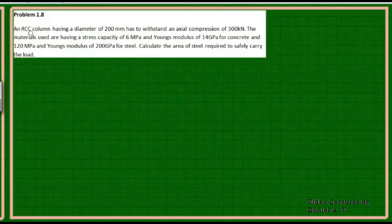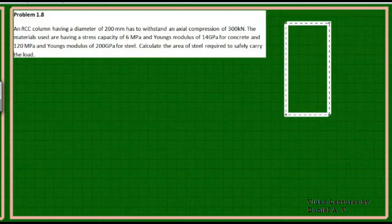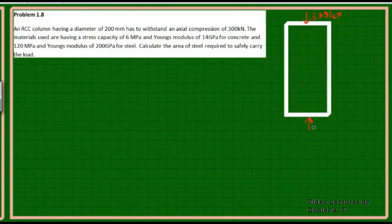We have an RCC column having a diameter of 200 mm that has to withstand an axial compression of 300 kilonewtons. The column is subjected to a compressive load of 300 kN acting from the top. Because of action and reaction — both equal to 300 kN — this column will be shortening.